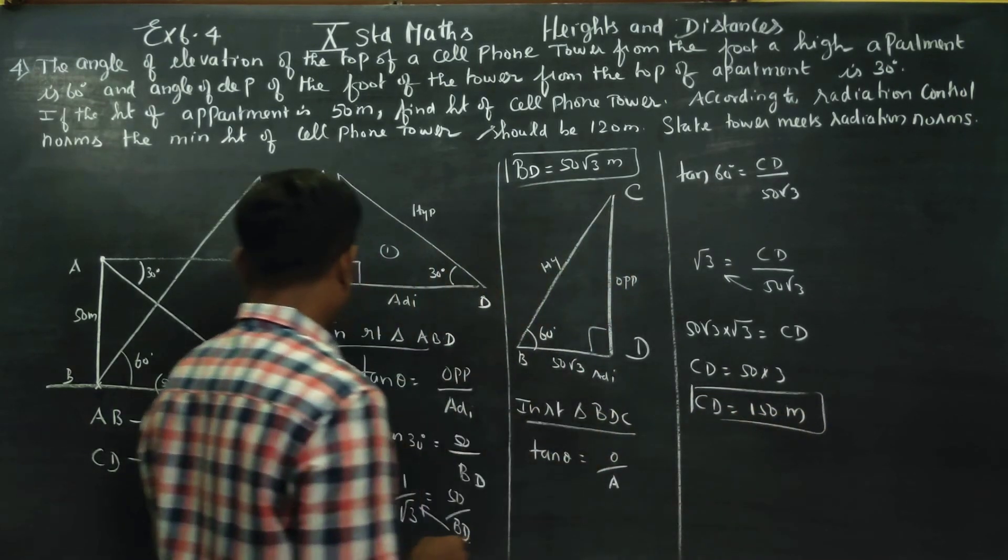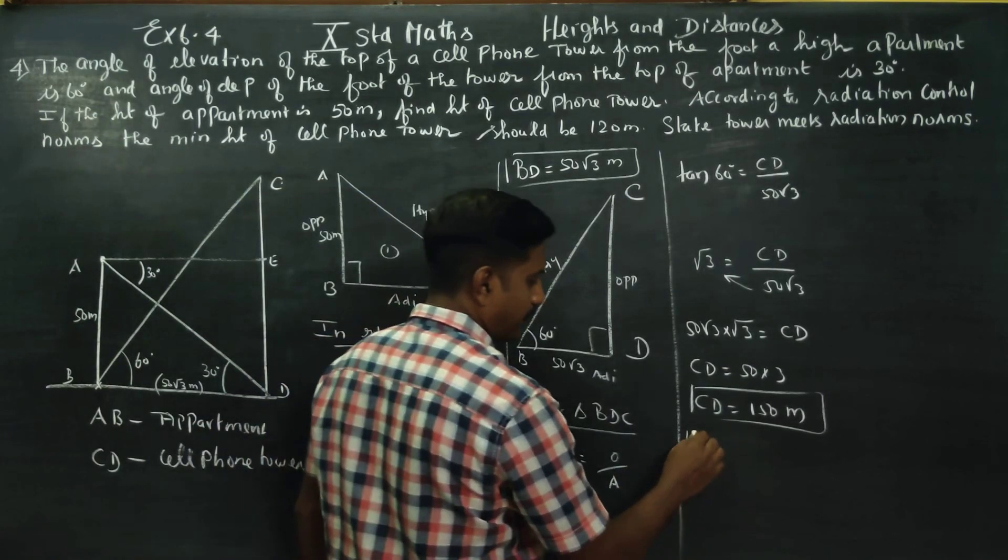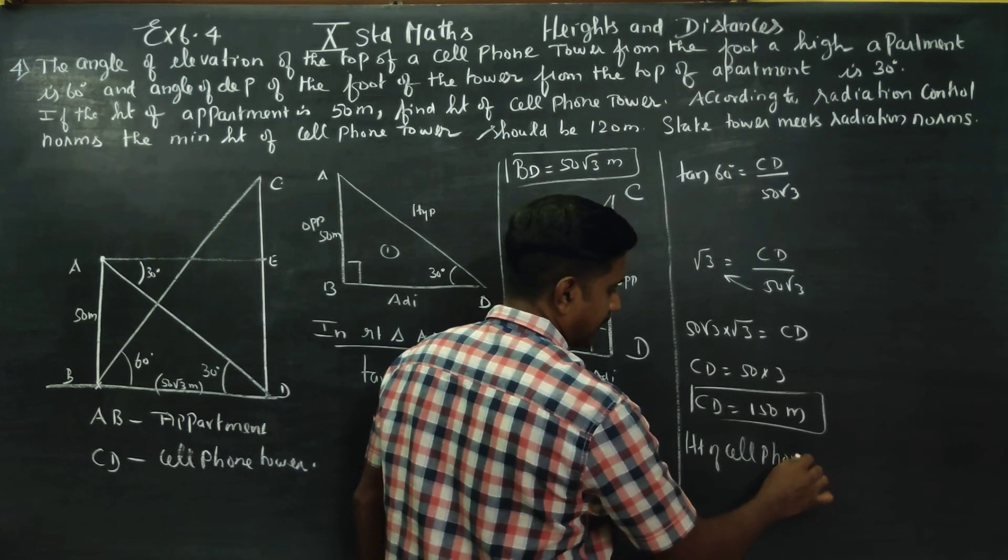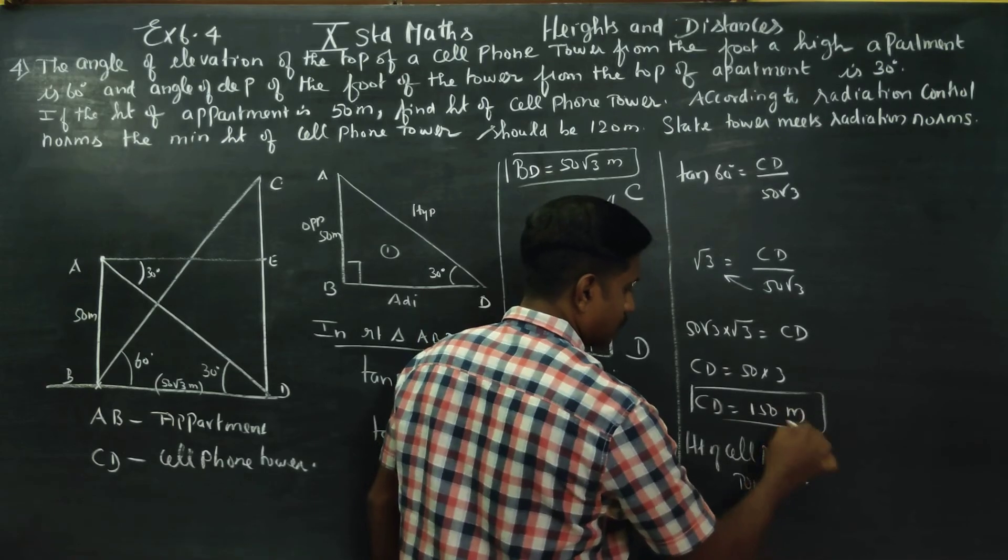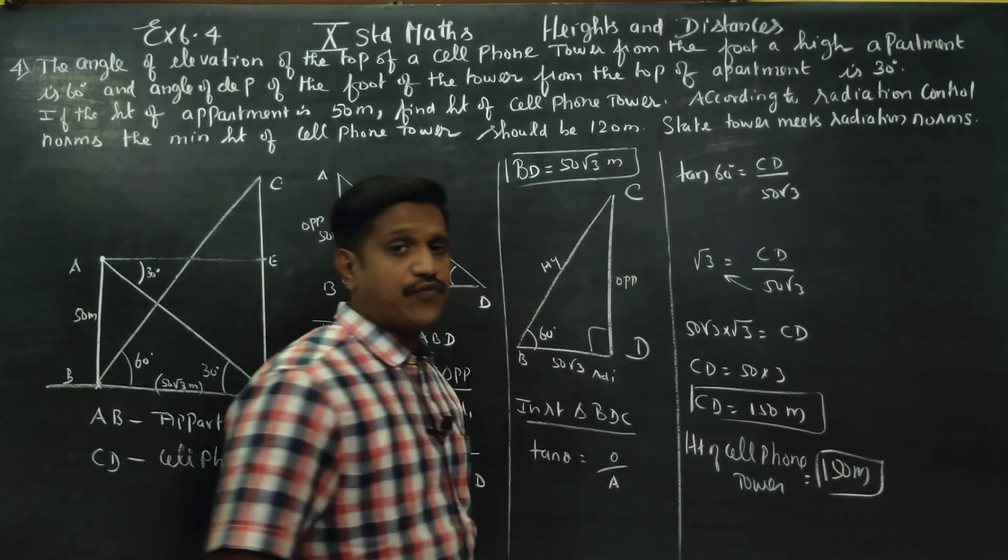What is CD? CD is the cell phone tower. Height of cell phone tower is equal to 150 meters.